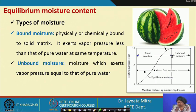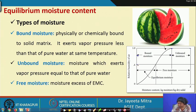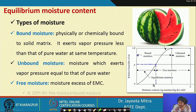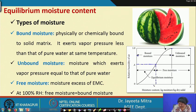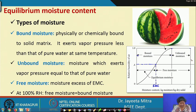If we further lower the moisture content, corresponding to a particular relative humidity — say point A — we get the moisture content, which is the equilibrium moisture content (EMC). The excess of free moisture above the EMC is called free moisture. At 100 percent relative humidity, bound moisture equals the equilibrium moisture content.